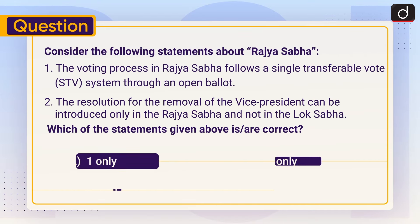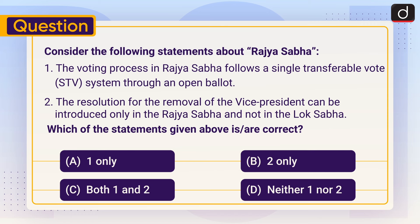Now it is time for a practice question. Consider the following statements about Rajya Sabha: One — the voting process in Rajya Sabha follows a single transferable vote system through an open ballot. Two — the resolution for the removal of the Vice President can be introduced only in the Rajya Sabha and not in the Lok Sabha. Which of the statements given above is or are correct? (1) One only, (2) Two only, (3) Both one and two, or (4) Neither one nor two. Send the answer in the comment section. Stay tuned for the next episode. Thanks for watching, have a great day.